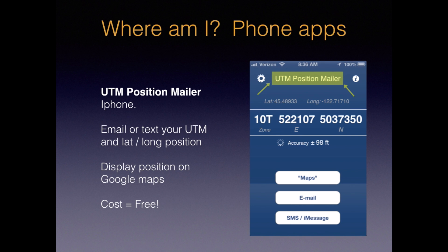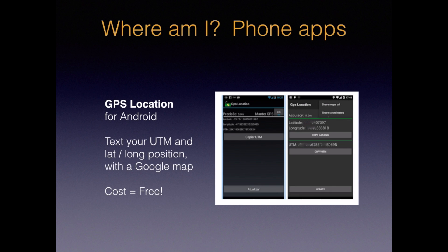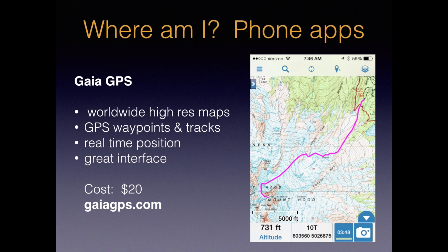I think every backcountry traveler should have an app like this on their phone and know how to use it. And when this video is over in about 30 seconds, go get it yourself. For Android users, try GPS Location — it does the same thing and it's also free. And finally, here's the best GPS wilderness phone app: Gaia GPS. Gaia turns your smartphone into a fully featured backcountry GPS, showing your real-time position over a variety of great quality base maps. I think it's well worth it to buy this app and spend an hour or so learning how to use it. I've made a complete video tutorial on how to use Gaia GPS, and you can see it at croc.org.